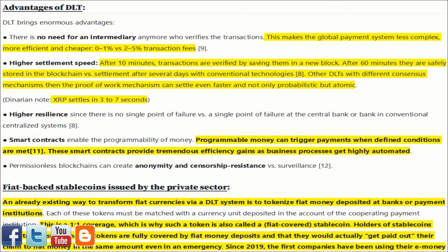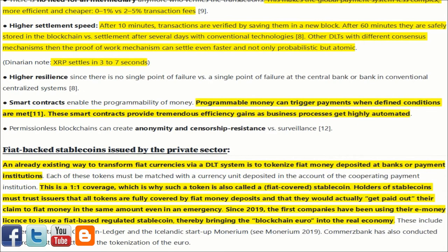DLT brings enormous advantages. There is no need for an intermediary to verify transactions, making the global payment system less complex, more efficient, and cheaper — with transaction fees of 0–1% versus 2–5% for conventional systems. Higher settlement speed is another benefit: after 10 minutes, transactions are verified by saving them in a new block, and after 60 minutes they are safely stored in the blockchain, versus settlement after several days with conventional technologies. Other DLTs with different consensus mechanisms can settle even faster — not only probabilistically but atomically.